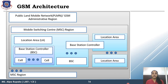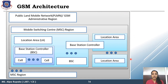The whole architecture of one operator is known as PLMN — Public Land Mobile Network. PLMN is further divided into different MSC regions. Each MSC region is divided into local areas, local areas into BSC coverage zones, BSC into different cells, and at each cell center you have a BTS. This is the complete hierarchy of your GSM architecture.